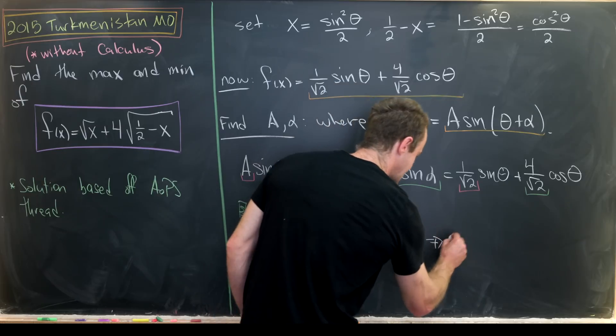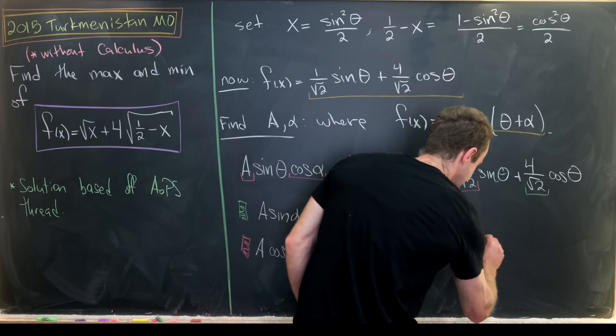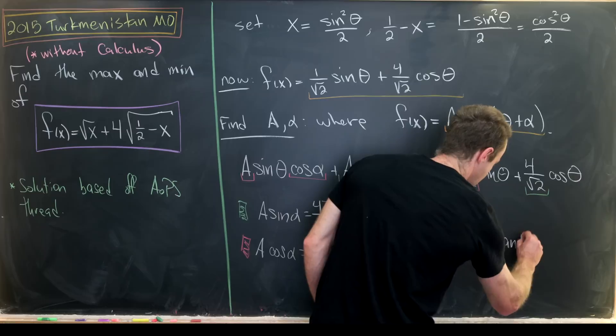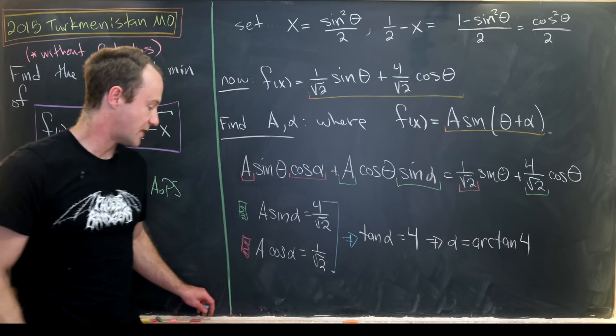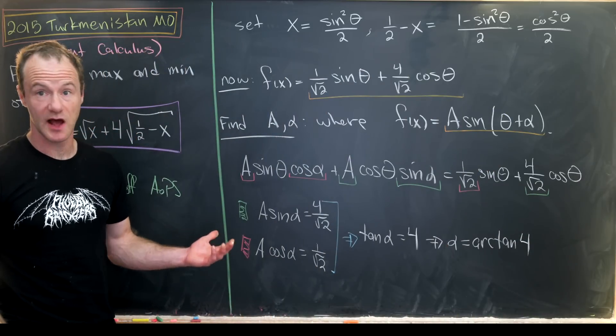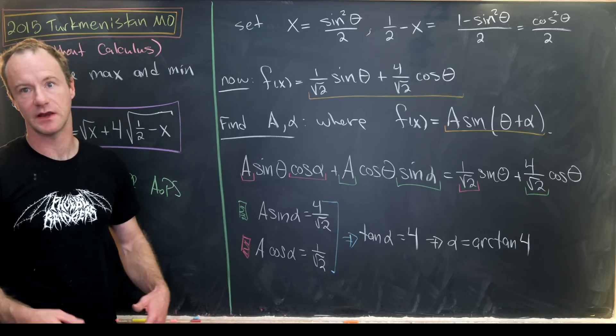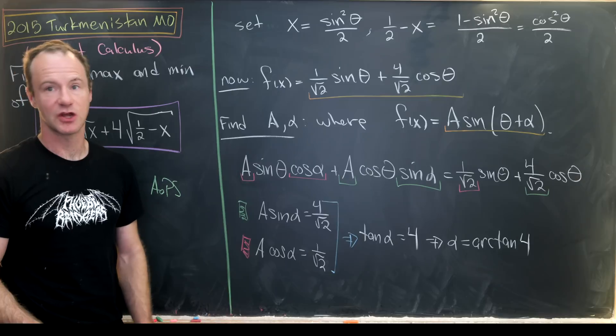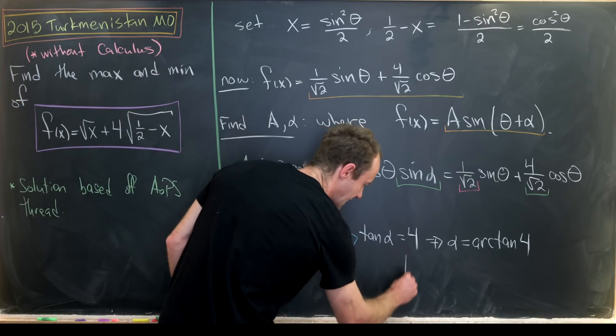But that means that our angle alpha is in fact the arc tan of four. But now we can complete a triangle with this angle and easily find the sine and the cosine of this angle. So let's do that.